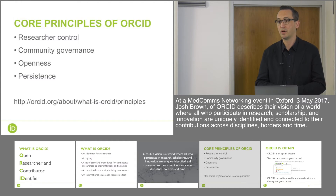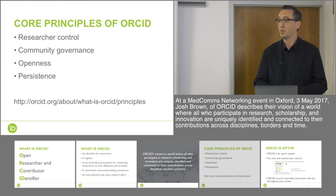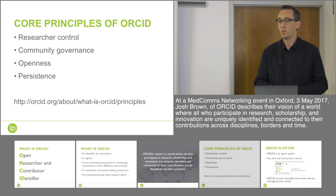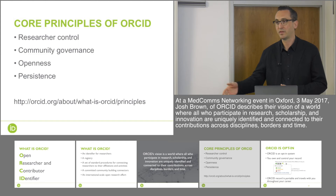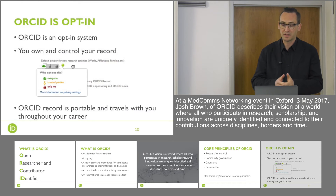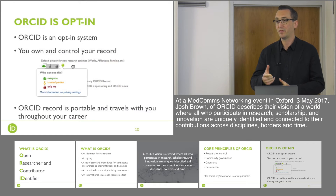Our core principles include researcher control: the individual researcher owns the data attached to their ORCID identifier and controls every aspect of their record. Community governance: our board of directors is elected from our community members. Openness: we believe openness boosts transparency, sustainability and the strength of science. And persistence: we are a piece of infrastructure and people build ORCID identifiers into their systems — we need to be around today and for the long term. We're an opt-in system; the individual decides what gets attached to their record, who can add information, and how visible that information is.